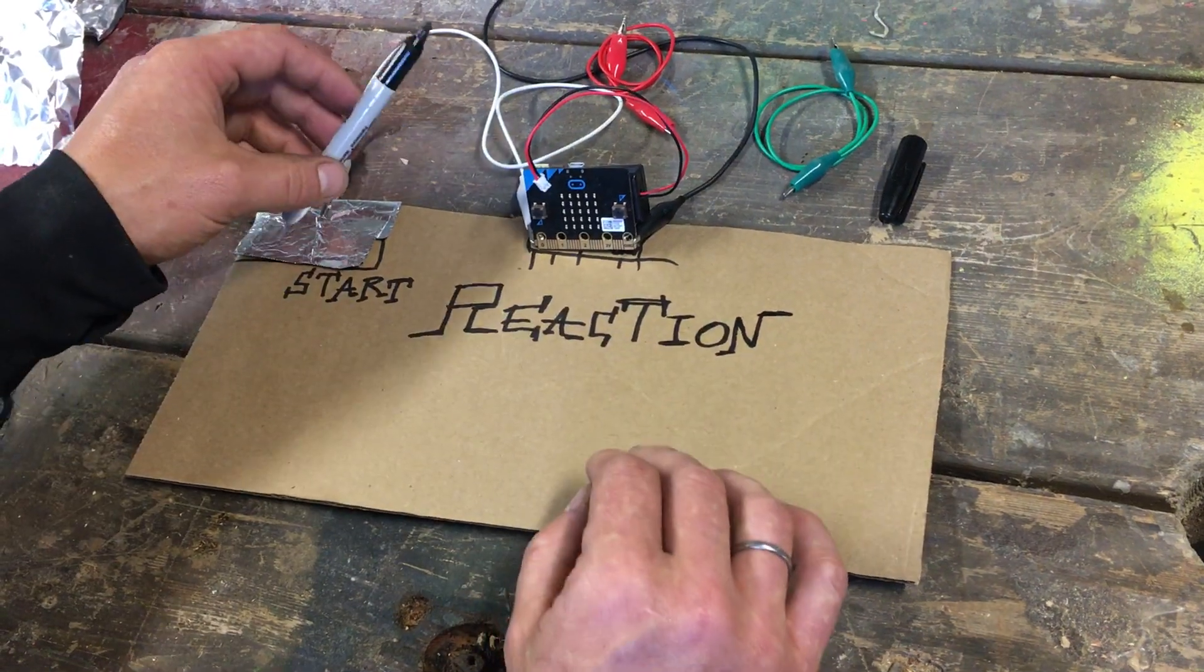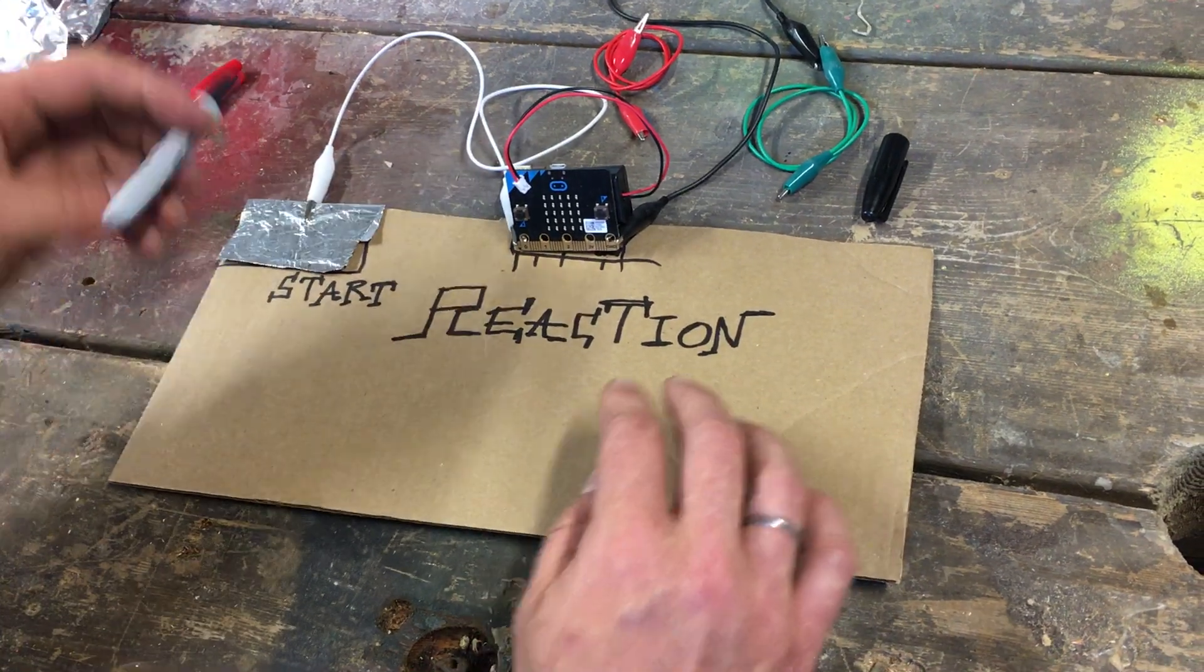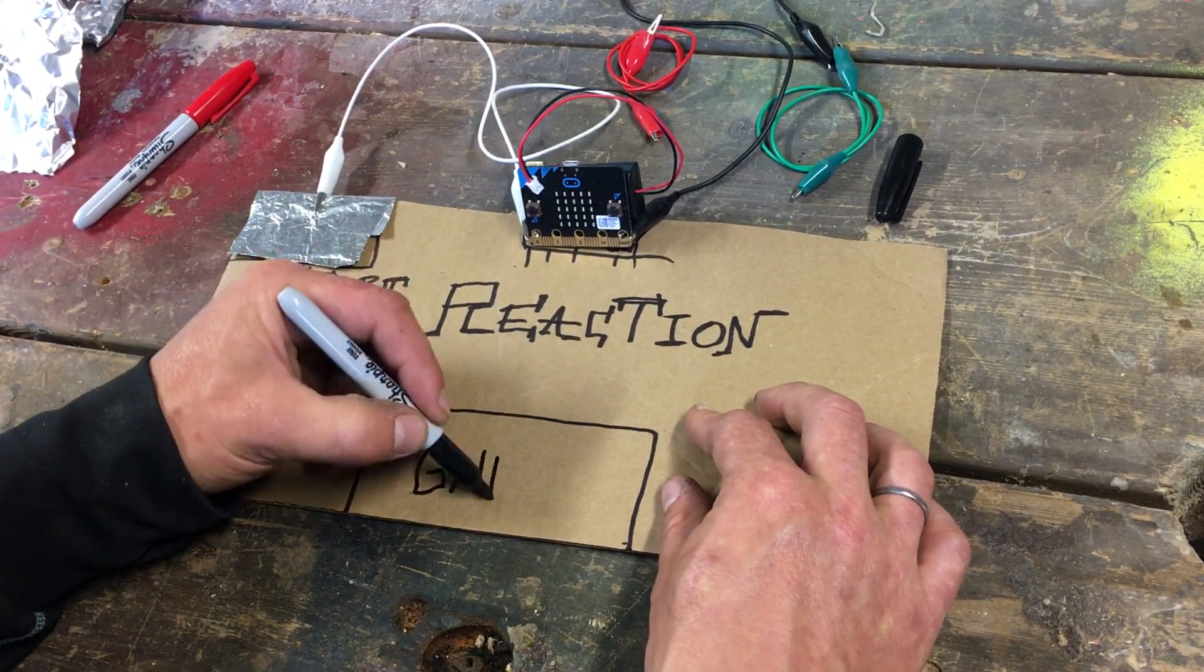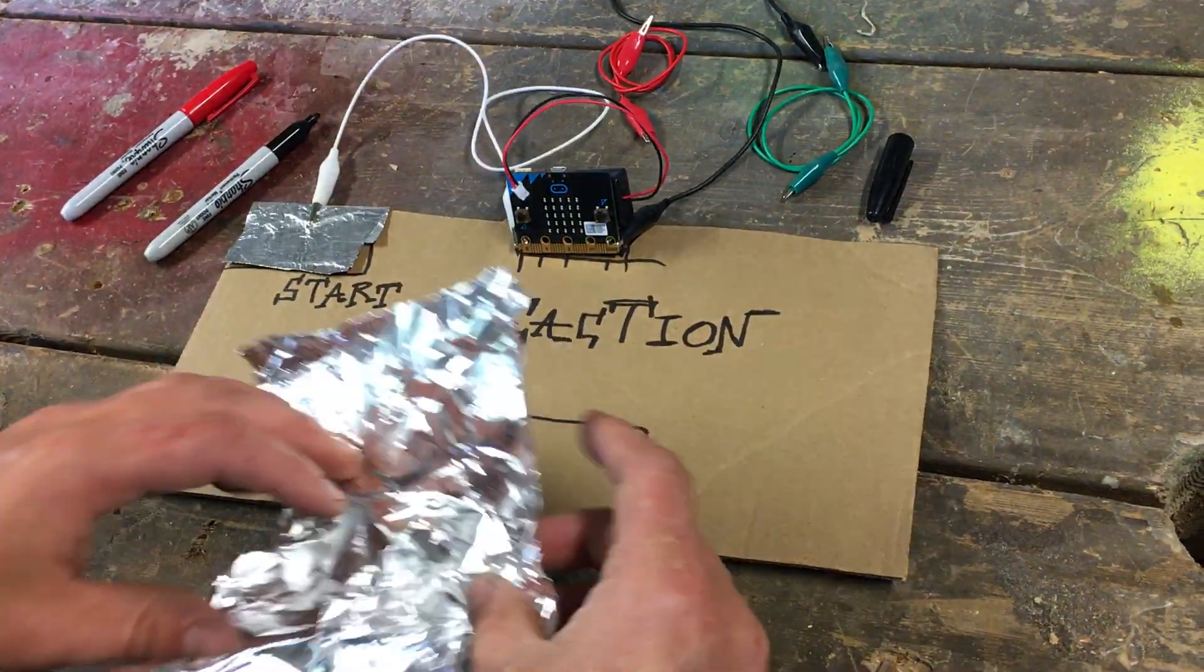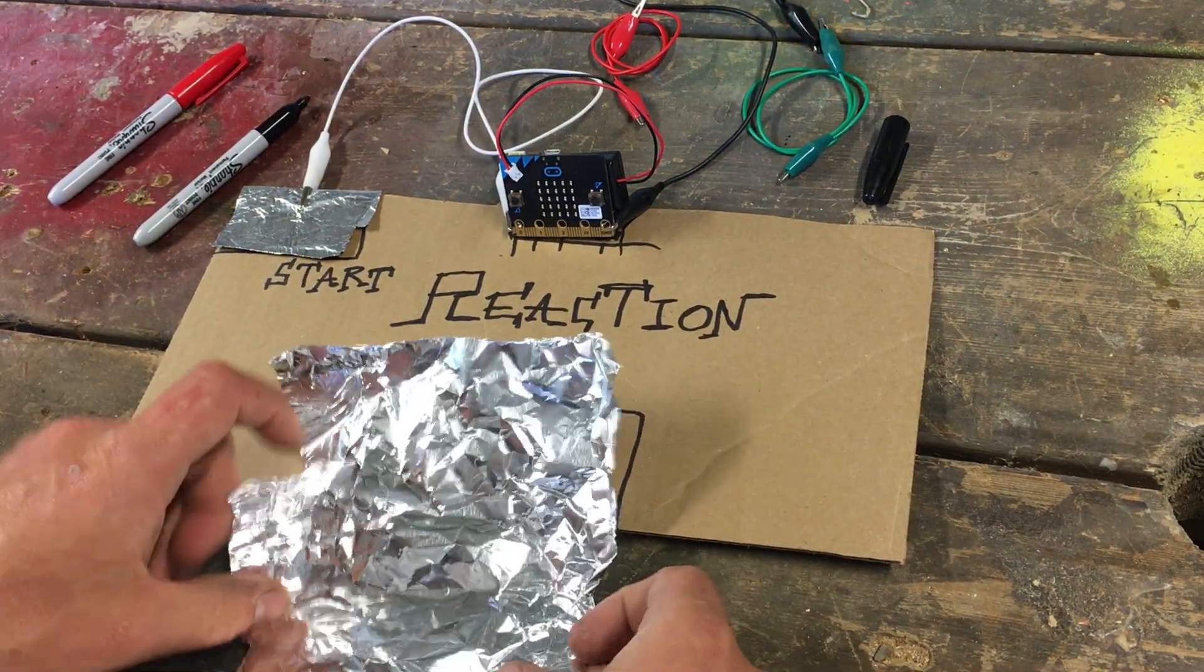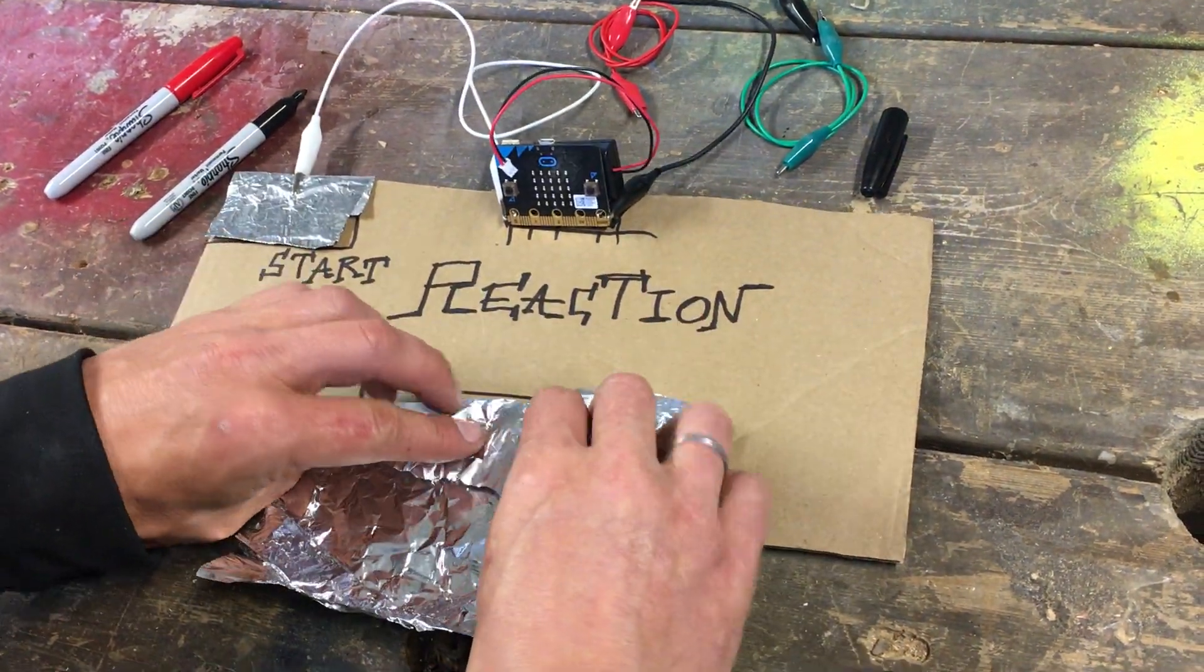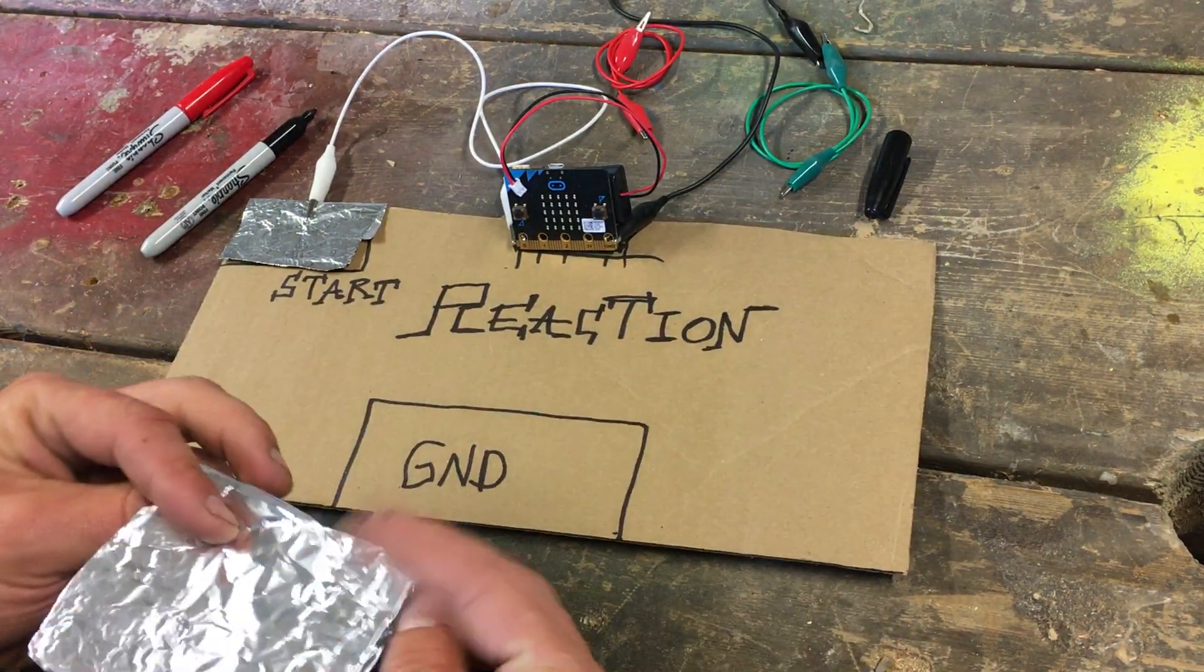We're going to do a section for ground and that's going to be in between the players. Ground is right in the middle of the game board. The two players are going to put their hands on it, so we need a circuit. We use resistive touch, so we need a circuit.